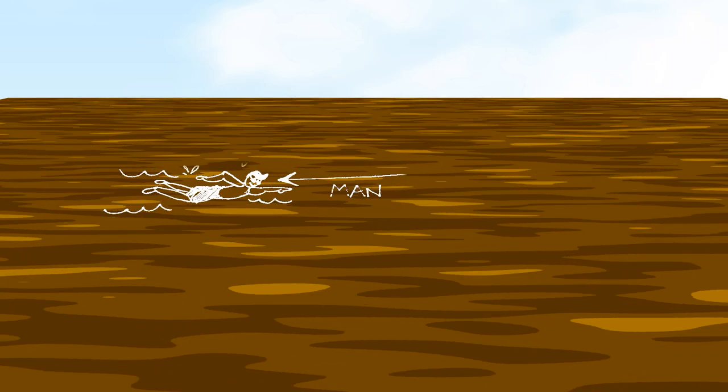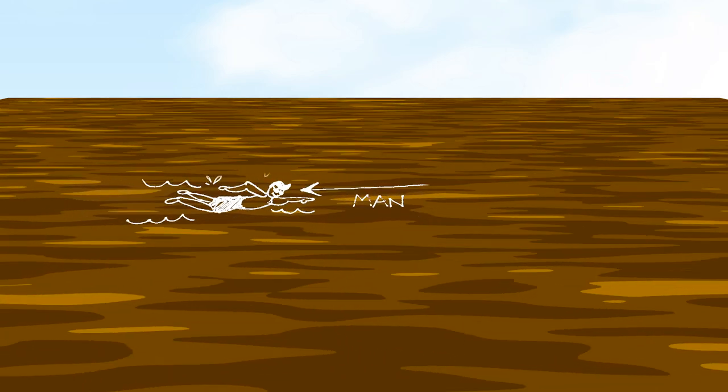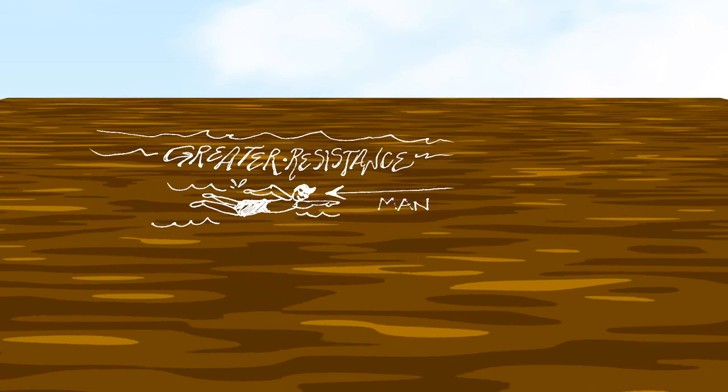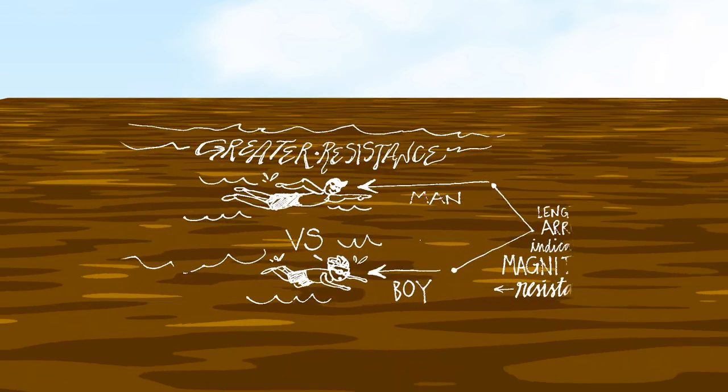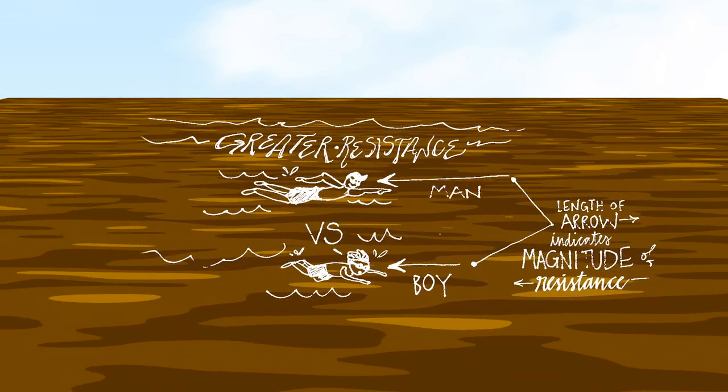To get a better understanding of how the Higgs mechanism works, picture a swimming pool filled with molasses. When a person with greater mass attempts to swim in the pool, he or she will experience greater resistance. Conversely, when a person with less mass attempts to swim in the pool, then he or she will experience reduced resistance.